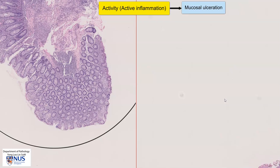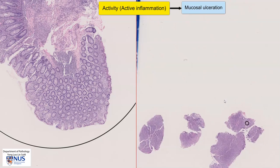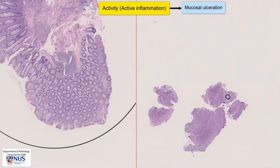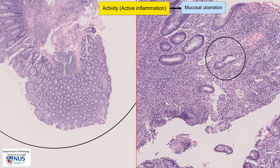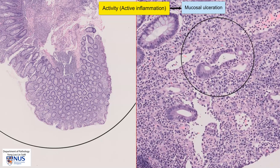Another feature of active inflammation can be seen in this biopsy here. If we look at the crypt, we can see that there are a lot of neutrophils infiltrating into the crypt epithelium, and this is known as cryptitis. This is also a sign of activity. Sometimes we can have aggregates of neutrophils within the lumina of the crypts, and those are known as crypt abscesses.